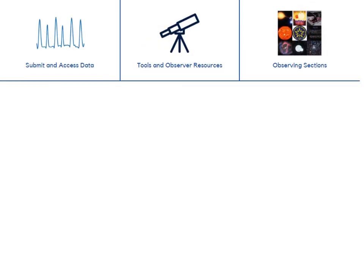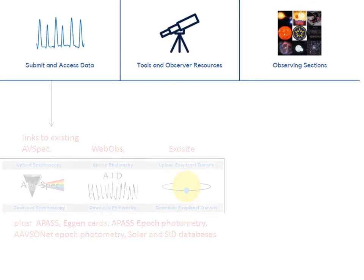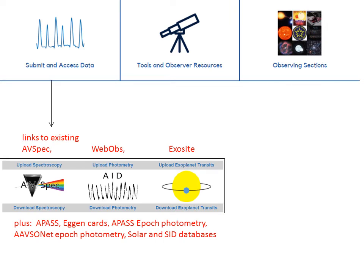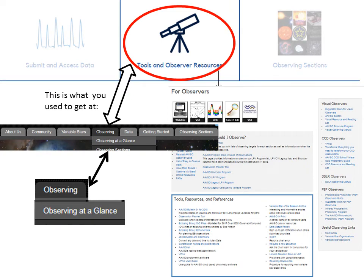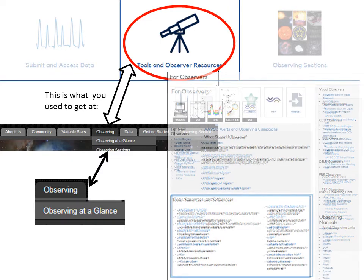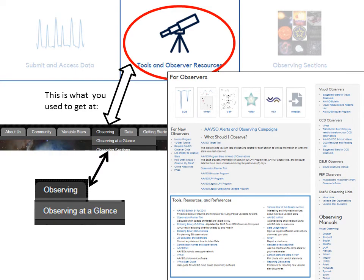The middle row of resources is shown here. Submit and access data takes you to AVSpec to submit or retrieve spectra, WebOBS for photometry, and ExoSite for exoplanet transit data, plus there are links to APAS, AgenCards, SOLAR, and SID data. The Tools and Observer Resources box links to the page that you used to find under Observing at a Glance, containing a large collection of resources for observers, but with a new look and a few additional links.